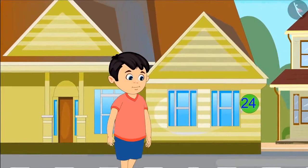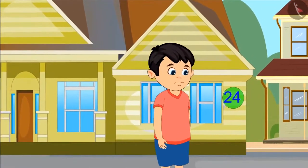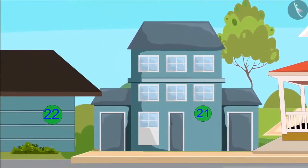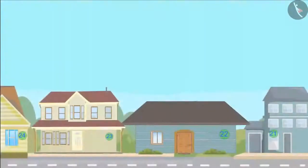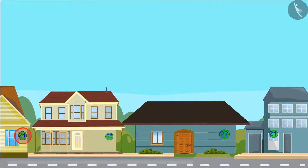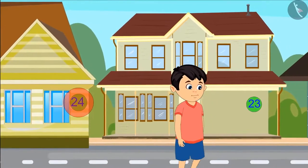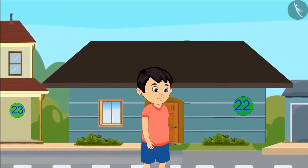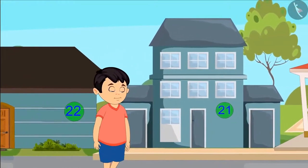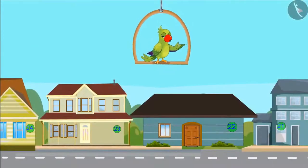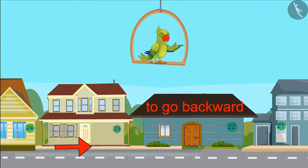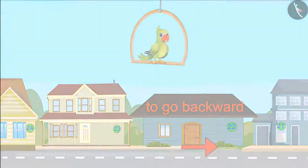After some time Chotu left Shyam's house and started going to his own house. When Chotu came from his house to Shyam's house, he saw house numbers twenty-one, twenty-two, twenty-three, and then twenty-four. Now going back, he left from house number twenty-four, the number before it is twenty-three, then twenty-two, and then twenty-one! Going forwards: twenty-one, twenty-two, twenty-three, twenty-four. Going backwards: twenty-three, twenty-two, twenty-one!